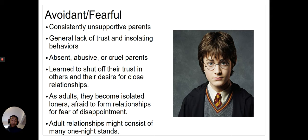Lastly, we have avoidant fearful. This is the opposite end of the spectrum from secure, where there are consistently unsupportive parents who could be absent, abusive, or cruel. As adults, these people become isolated loners, and a lot of their relationships consist of one-night stands. If we think about Harry Potter himself, he had loving birth parents but never got a chance to know them, and the adoptive parents who replaced them were cruel and abusive.